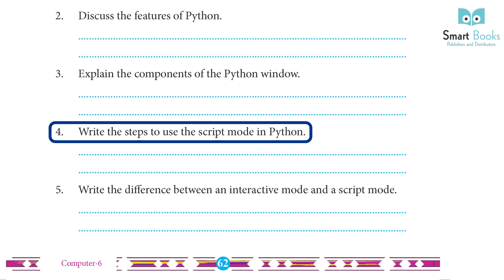Steps to use script mode in Python: 1. Start Python IDLE. 2. Click New on the File menu. 3. Type the commands in the window that opens. 4. Click on Save on the File menu. 5. Name the file with the .py extension.